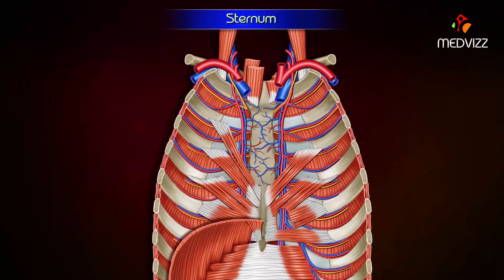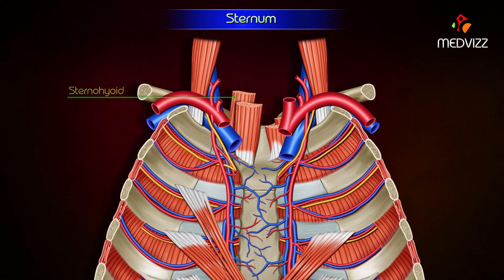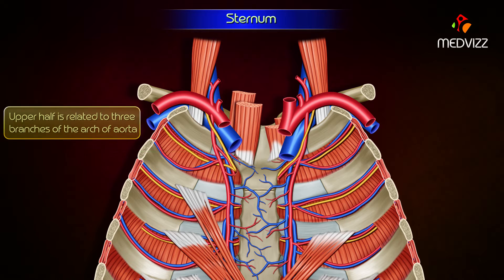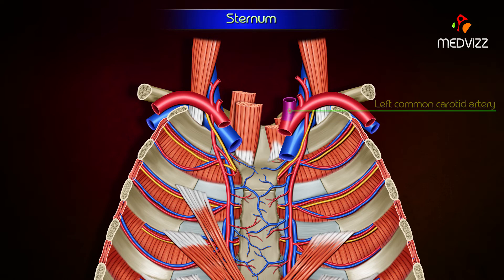On each side, the posterior surface provides attachment to two muscles: sternohyoid at the level of the clavicular notch and sternothyroid at the level of the facet for the first costal cartilage. The upper half is related to three branches of the arch of the aorta: brachiocephalic artery, left common carotid artery, left subclavian artery, and left brachiocephalic vein.